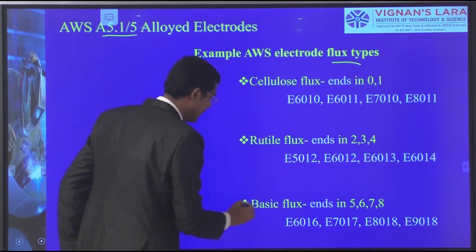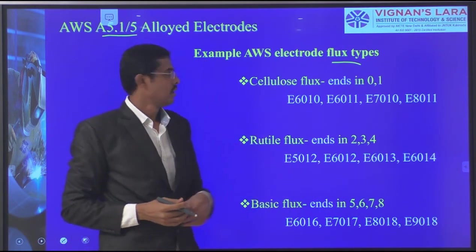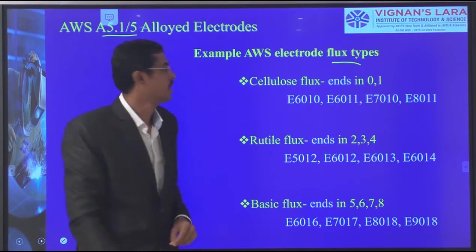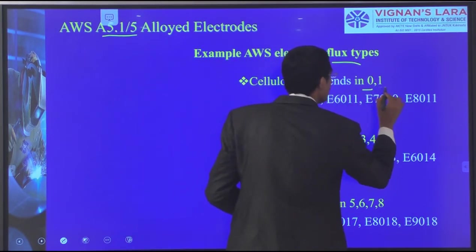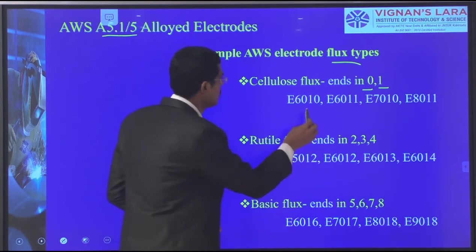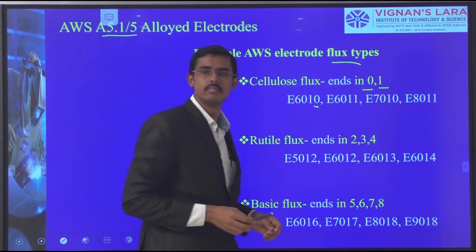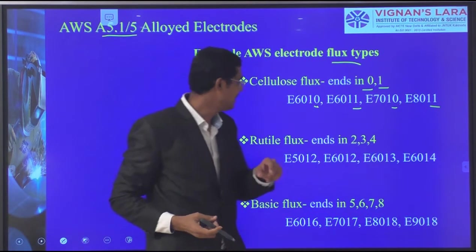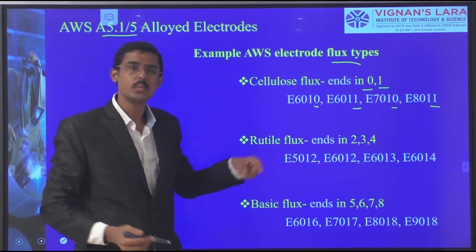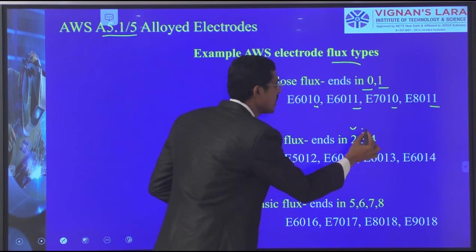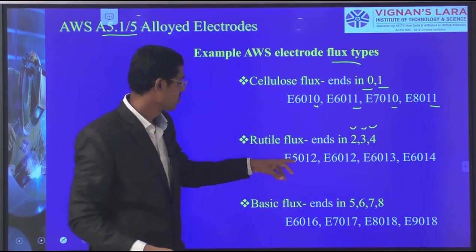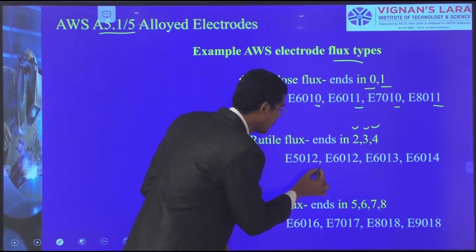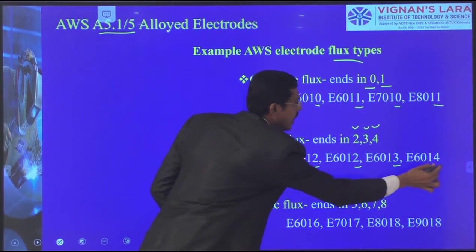We have already seen cellulose flux, rutile flux, and basic flux. In this, the cellulose flux for identification ends with zeros and ones — E6010 and E6011. Rutile flux ends with 2, 3, and 4 — such as E6022, E6023. Basic flux ends with 5, 6, 7, and 8. We understand by seeing the number in the industry which flux type is being used.